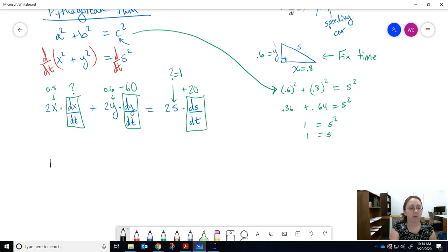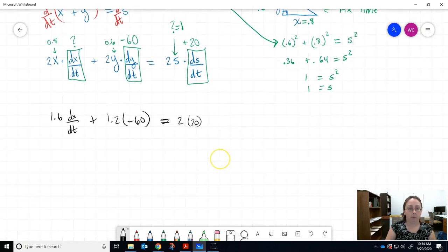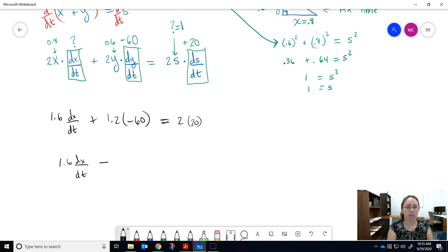If we plug everything in we can solve for what we were looking for. So 2 times 0.8, so that's 1.6 dx/dt, plus 2 times 0.6, so that's 1.2 times negative 60, equals 2 times 1, so 2 times 20. And we can use our calculator to work this out.